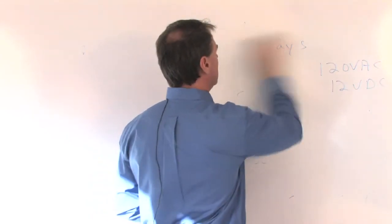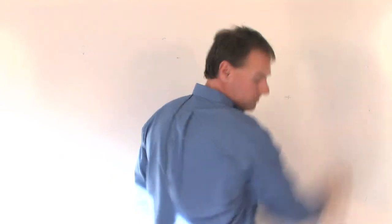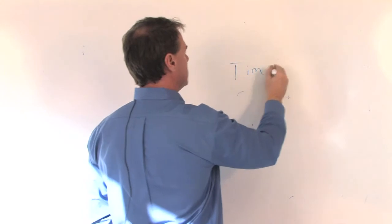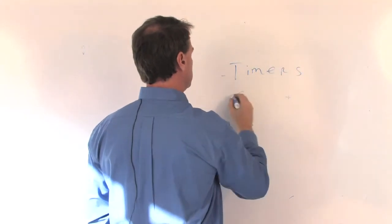We'll go through this pretty fast. The next area we'll touch about is called a timer. It's a type of relay.